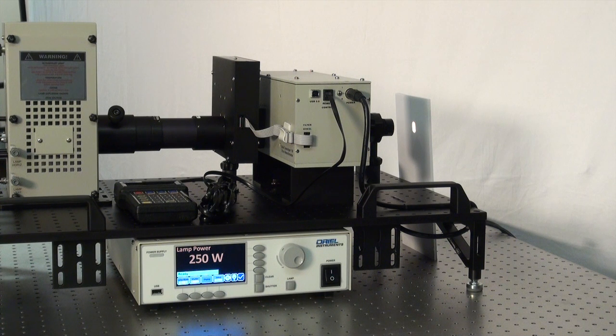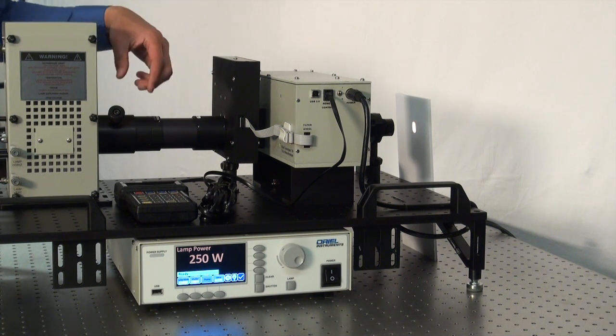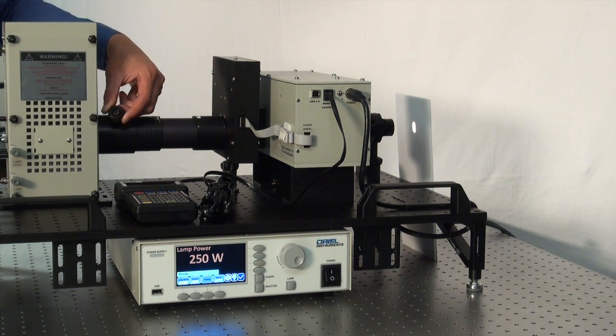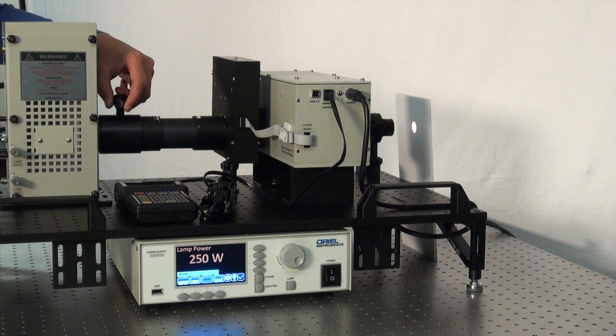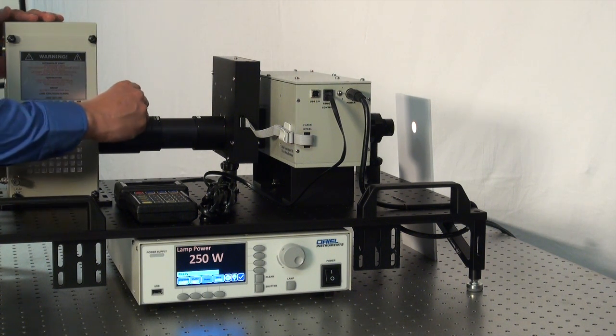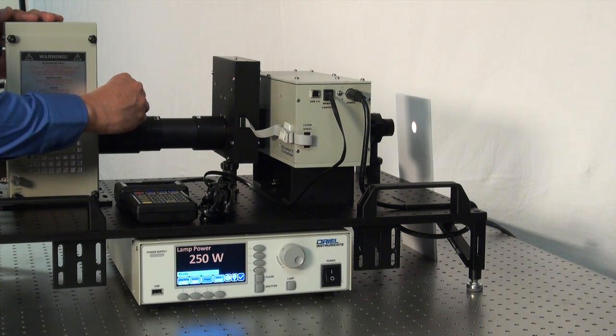So now that we have the filament and the reflected filament images superimposed onto your light output, we're going to defocus this. Using the focusing lens, we're going to unscrew this to the left, give us some room on the focusing lever. And as you defocus the filament, what you should see is a clear, uniform, spot-sized light output.